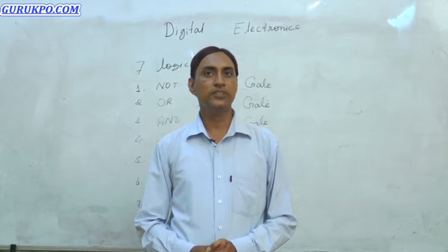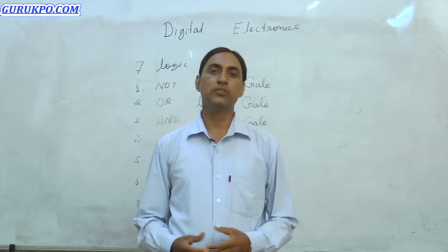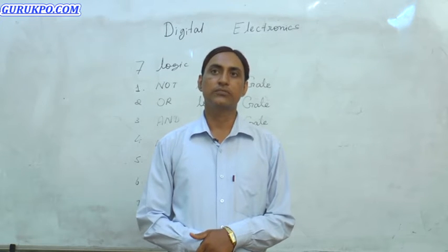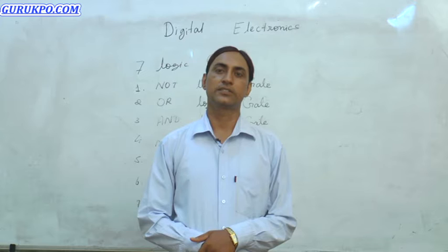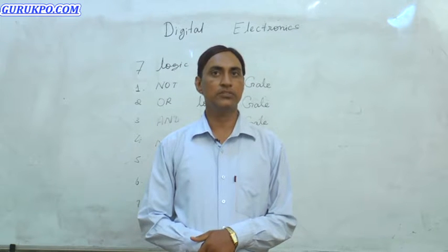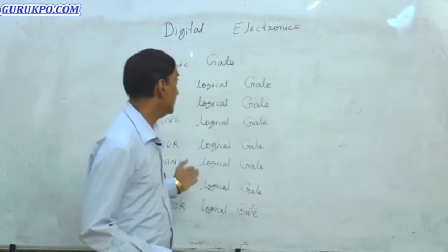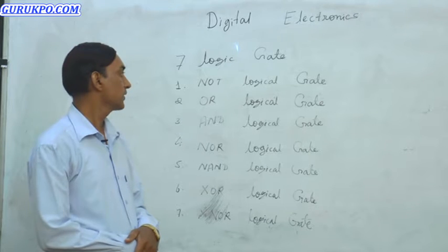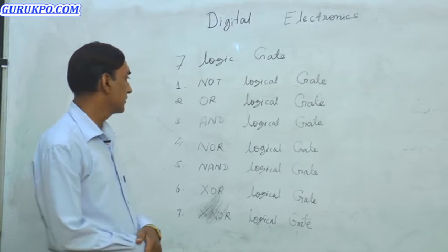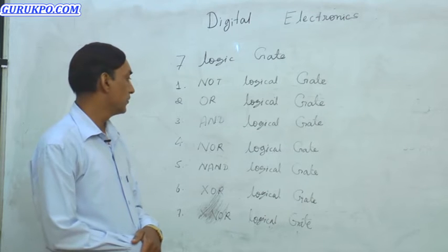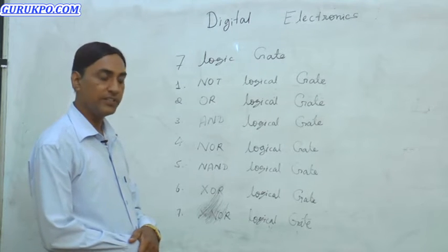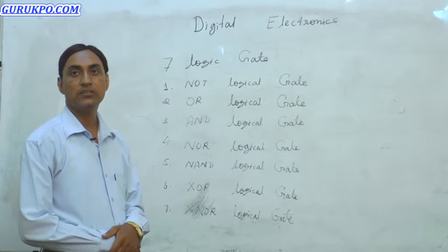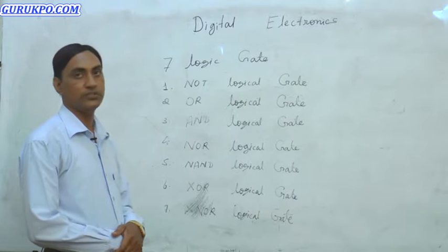In digital electronics we have some logical gates. There are a number of logical gates covered in digital electronics, but mostly we discuss about the seven logical gates. The names of the seven logical gates are: first is the NOT logical gate, second is the OR logical gate, third is the AND logical gate, fourth is the NOR logical gate, fifth is the NAND logical gate, sixth is the XOR logical gate, and the final one is the XNOR logical gate.